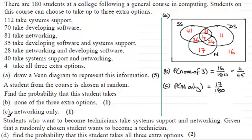Now for part D. Students who want to become technicians take systems support and networking. Given that a randomly chosen student wants to become a technician, find the probability that this student takes all three extra options, for two marks. Pause the video if you'd like to have a go.